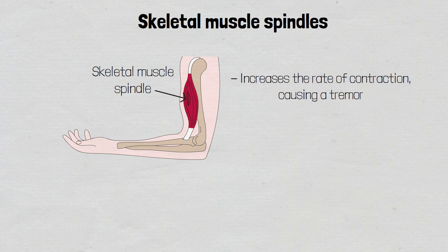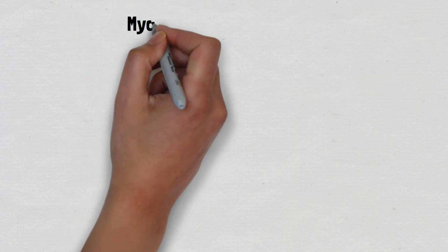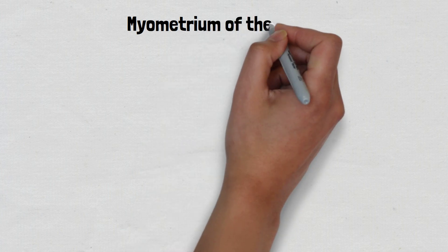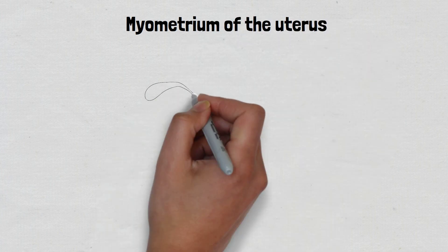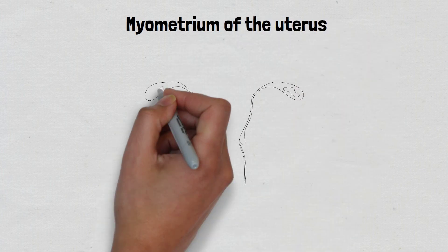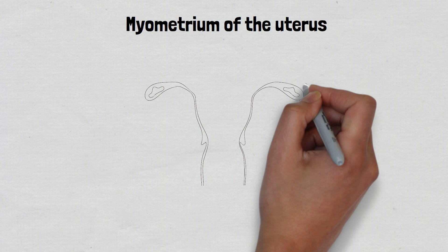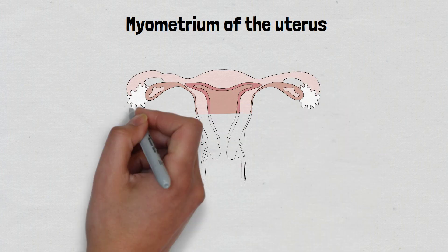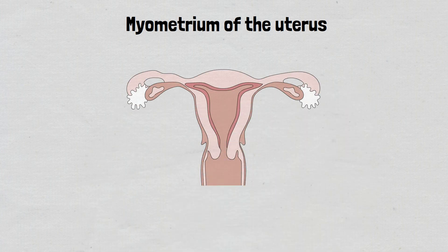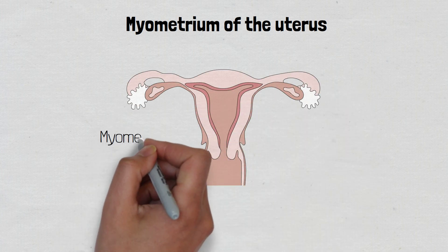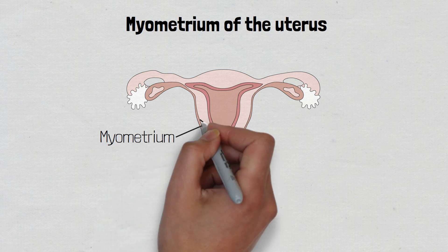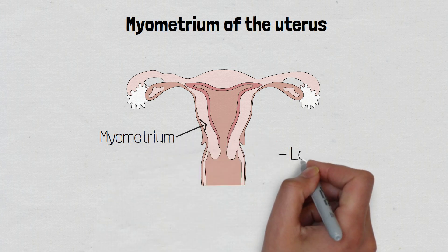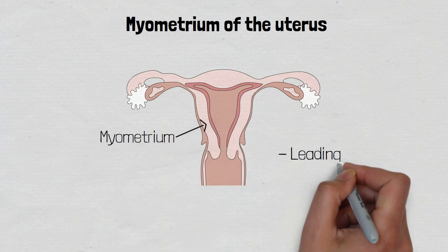There are beta-2 receptors within the myometrium of the uterus, which can cause uterine relaxation.